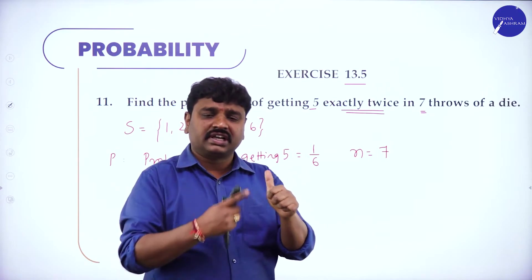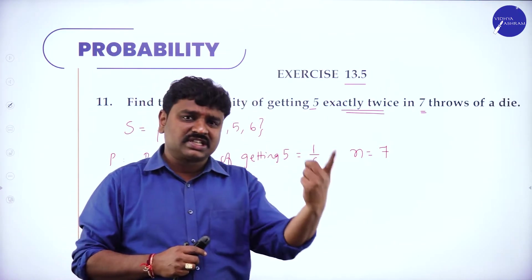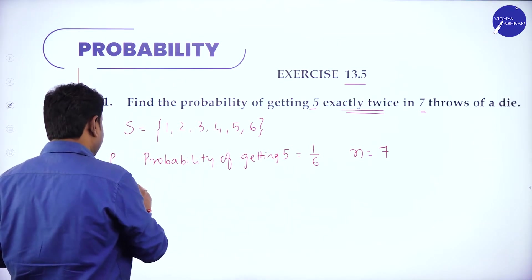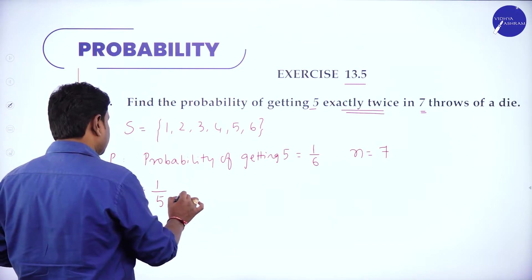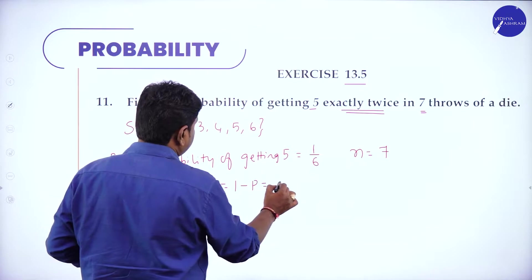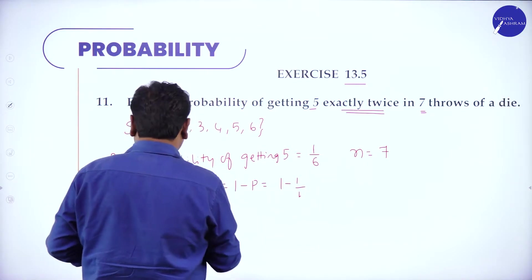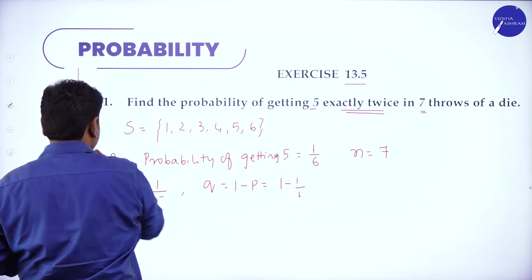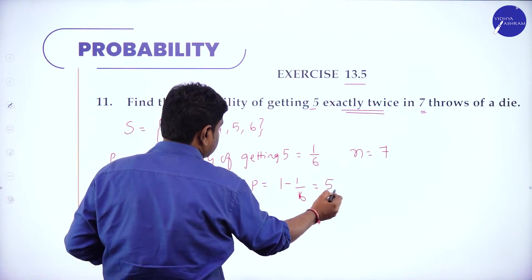For each trial we have only two outcomes: either success or failure, so they form Bernoulli trials. Probability of success p = 1/6. Probability of failure q = 1 − 1/6 = 5/6.